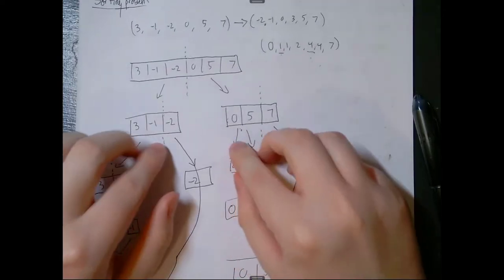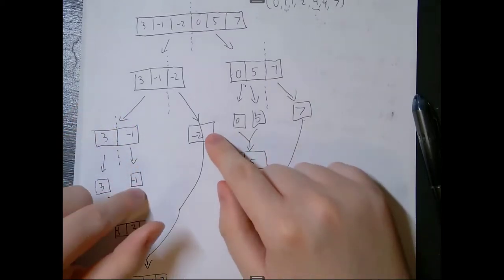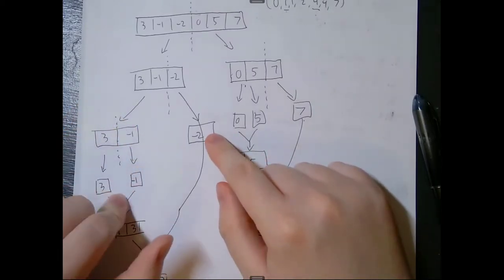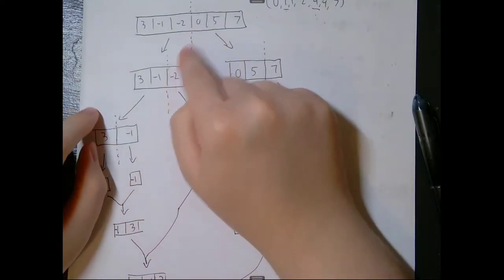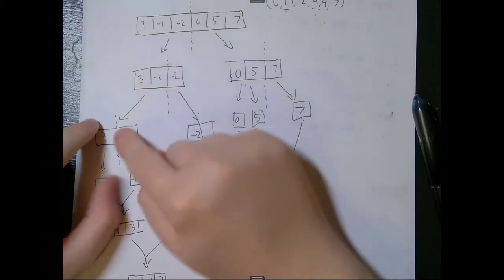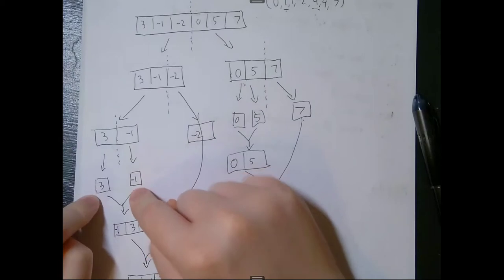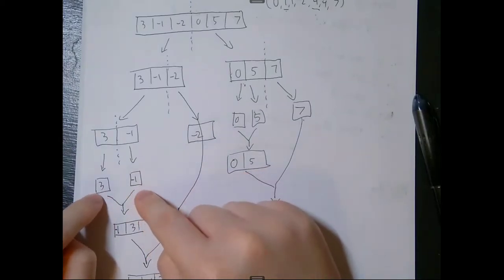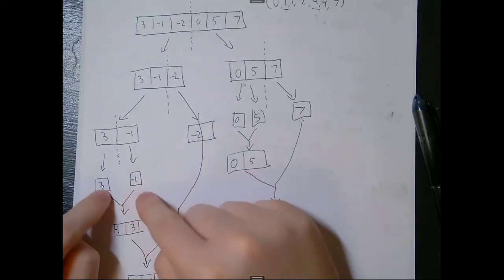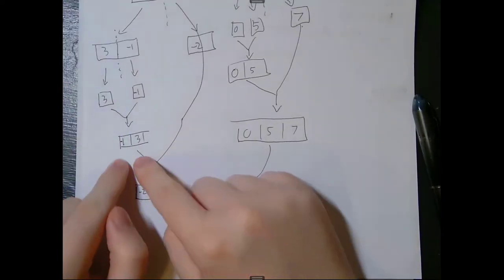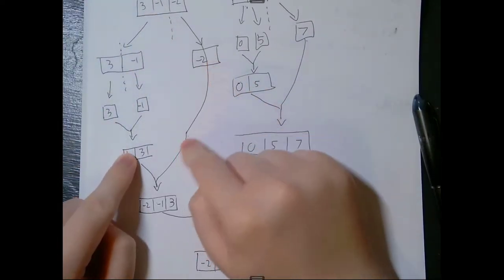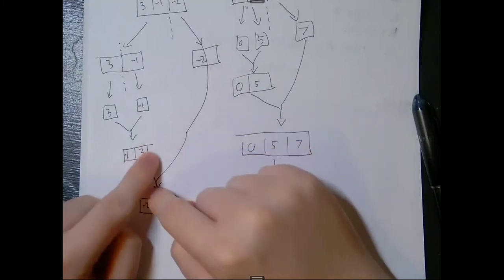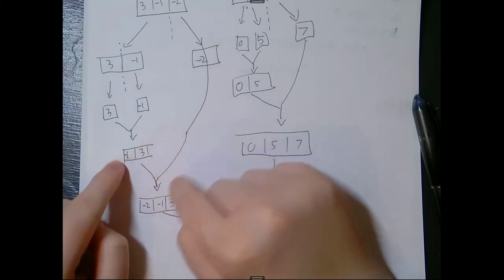It splits the list in half, considers each half separately, splits all those halves into halves, and so on, until it reaches single boxes. Then it starts combining them again. So it will go down, take the 3, negative 1, negative 2 half, split that in half, take the 3 and negative 1 half, split them into one piece, and since we can't split further, we combine them and sort those two. It combines this into negative 1, 3, then takes the negative 2 and combines it, since negative 2 is less than negative 1, putting that in front and everything else after it.